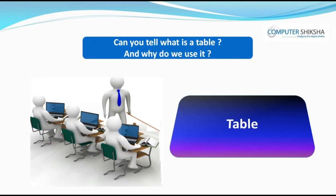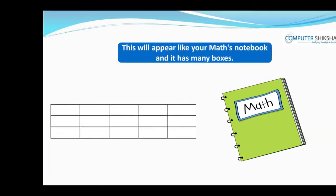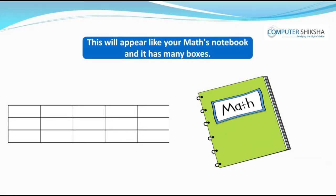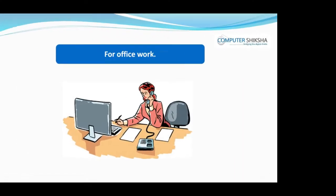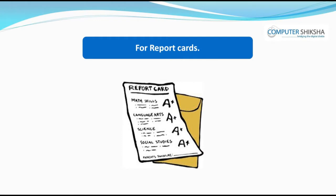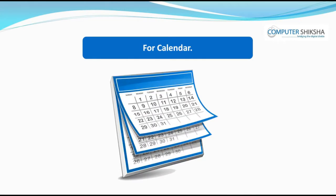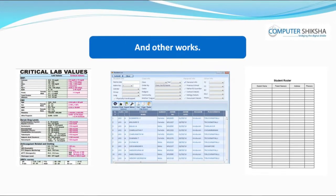Can you tell what is a table and why do we use it? A table is formed by columns and rows being put together. This will appear like your maths notebook and it has many boxes. We use tables for many things like making a list, for office work, for making report cards, making calendars, recording students' marks or their other details, etc.